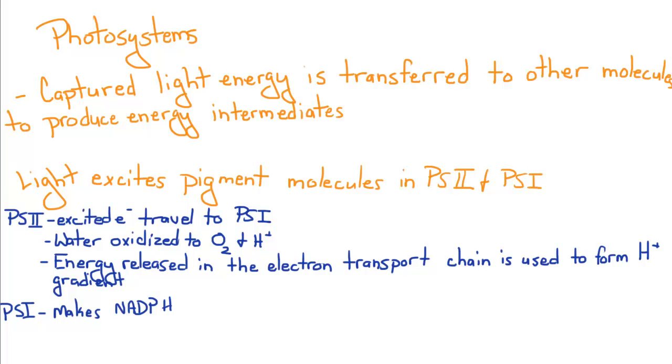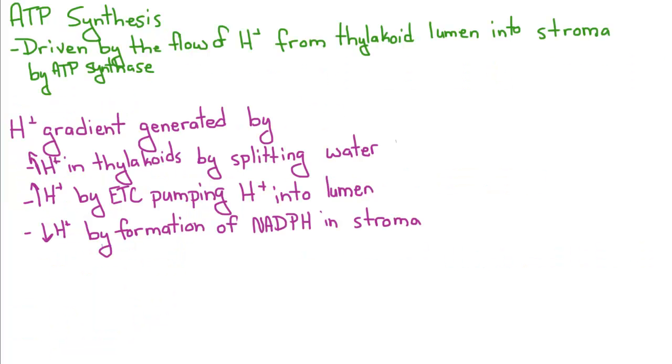And photosystem I, its main goal is to produce NADPH. Another important aspect of the light-dependent reactions is the formation of ATP synthesis.